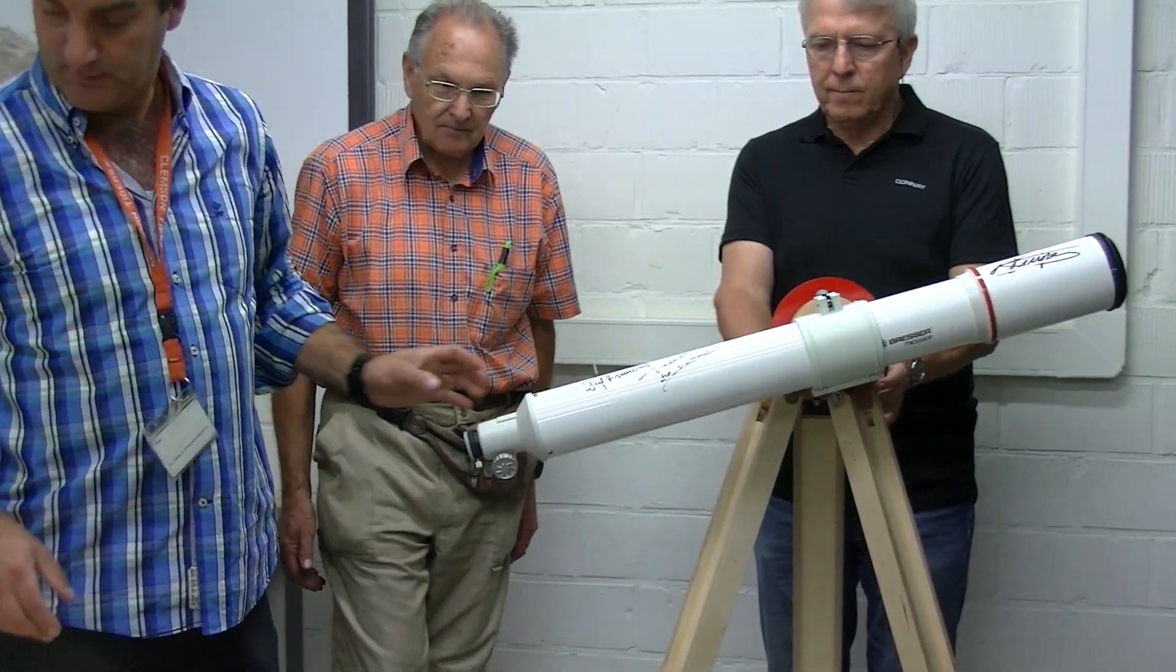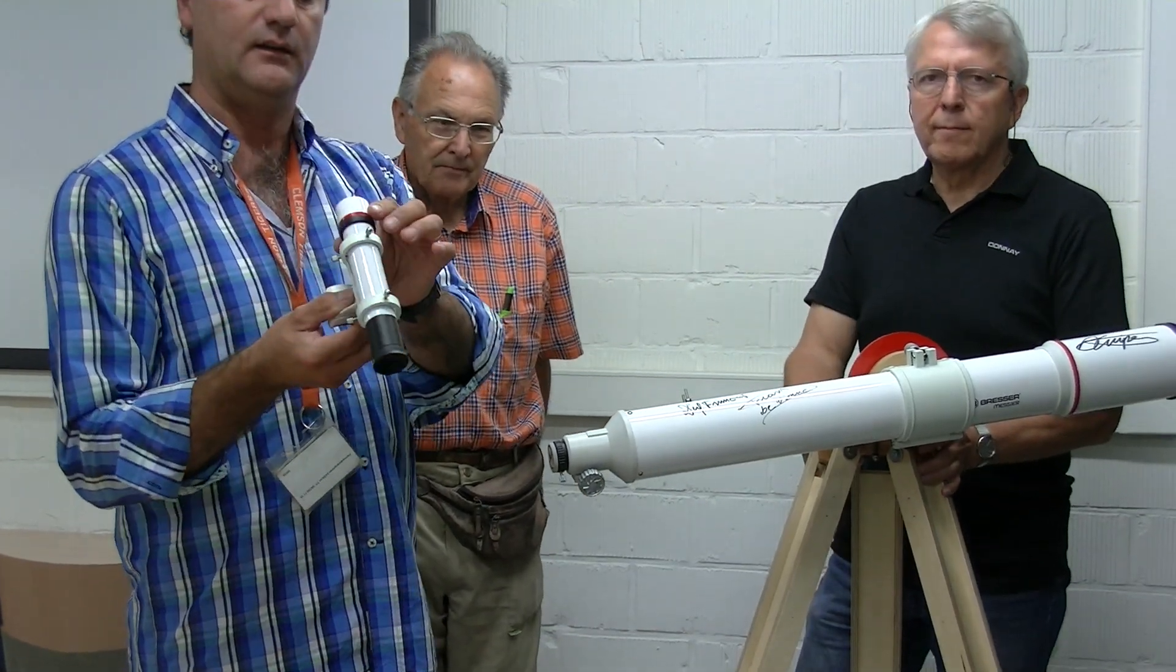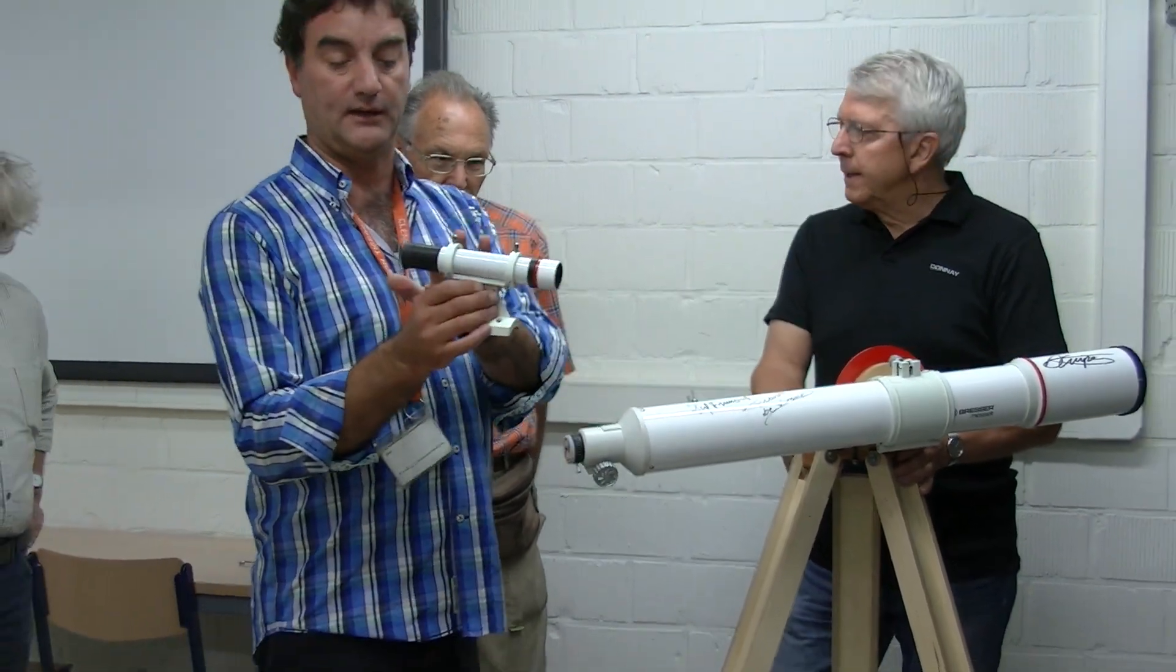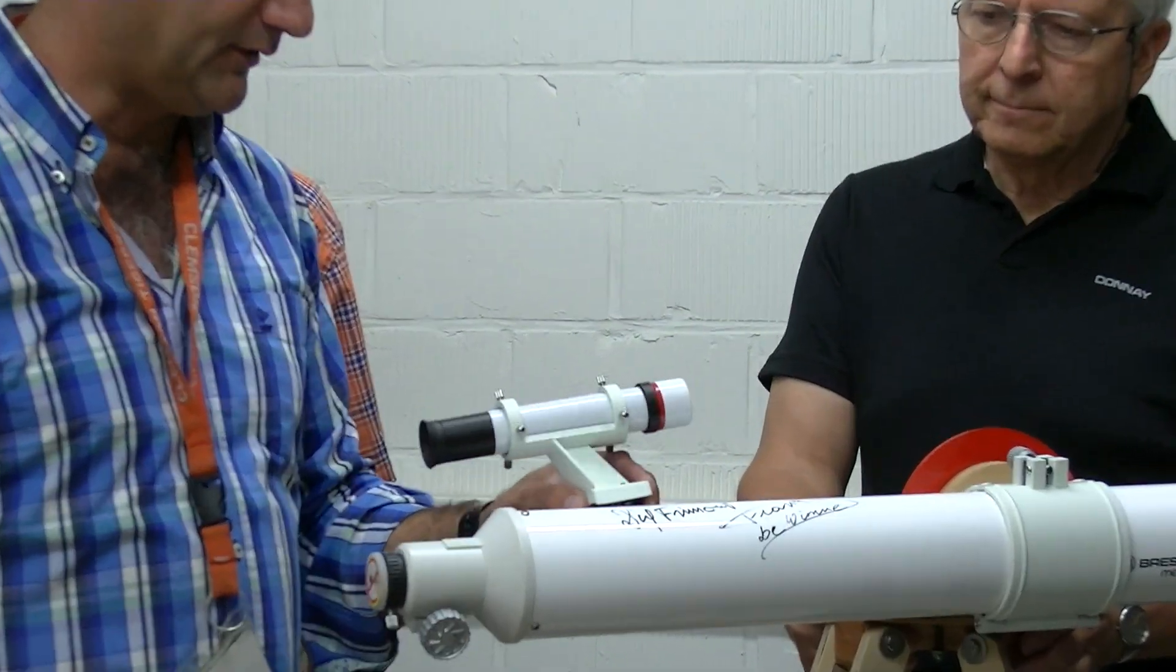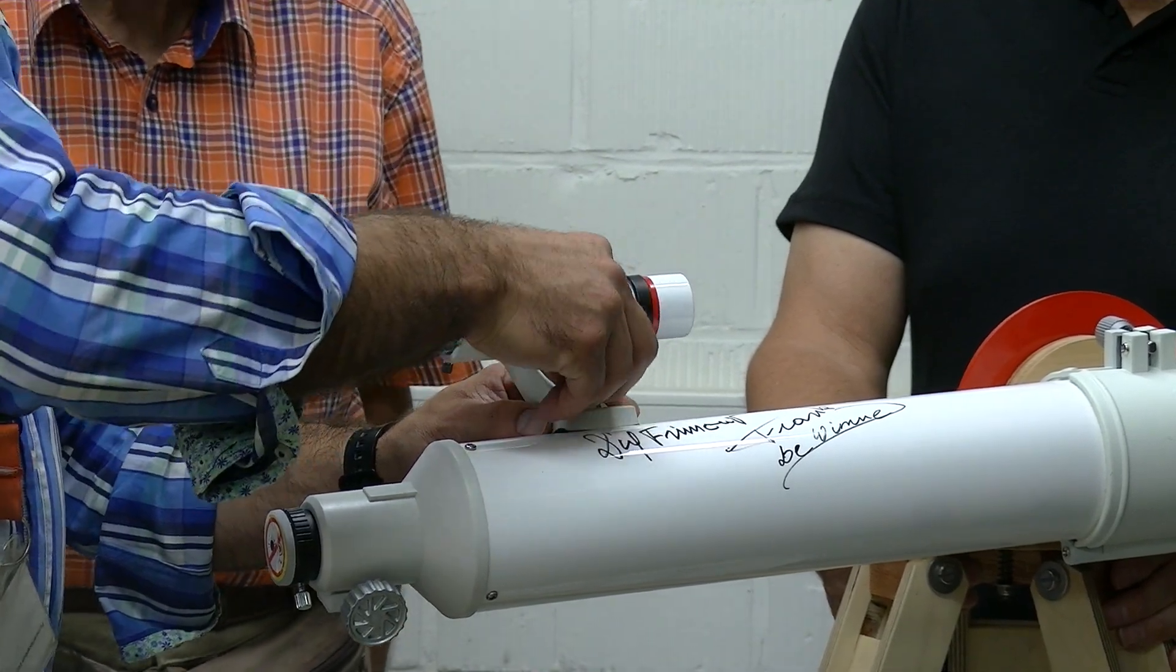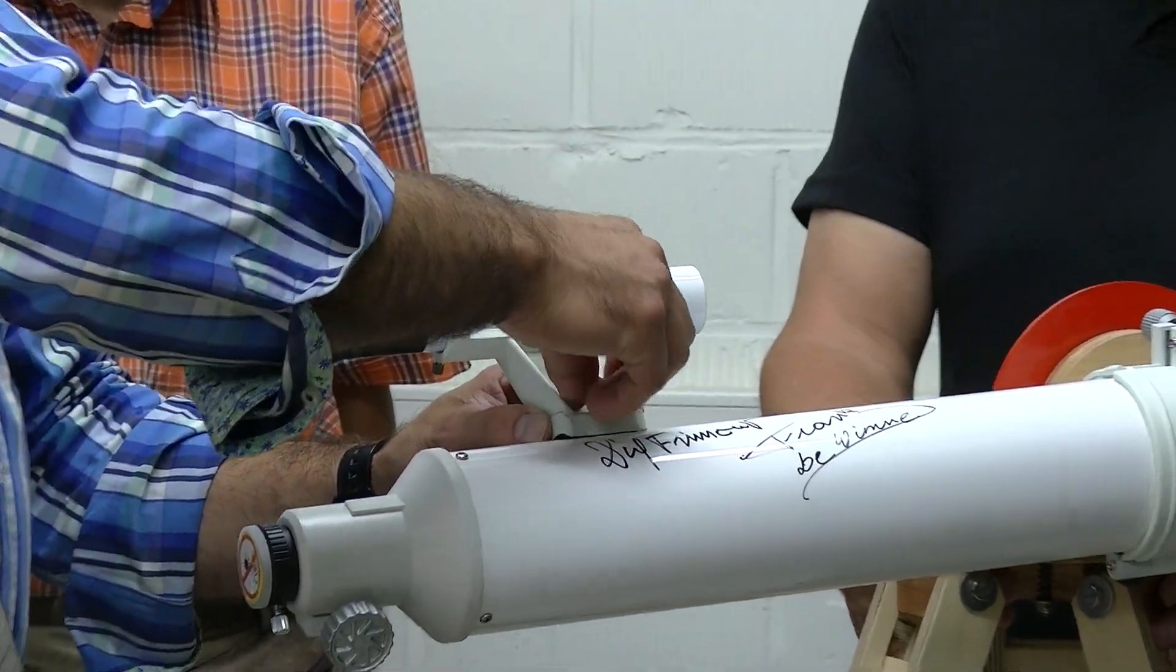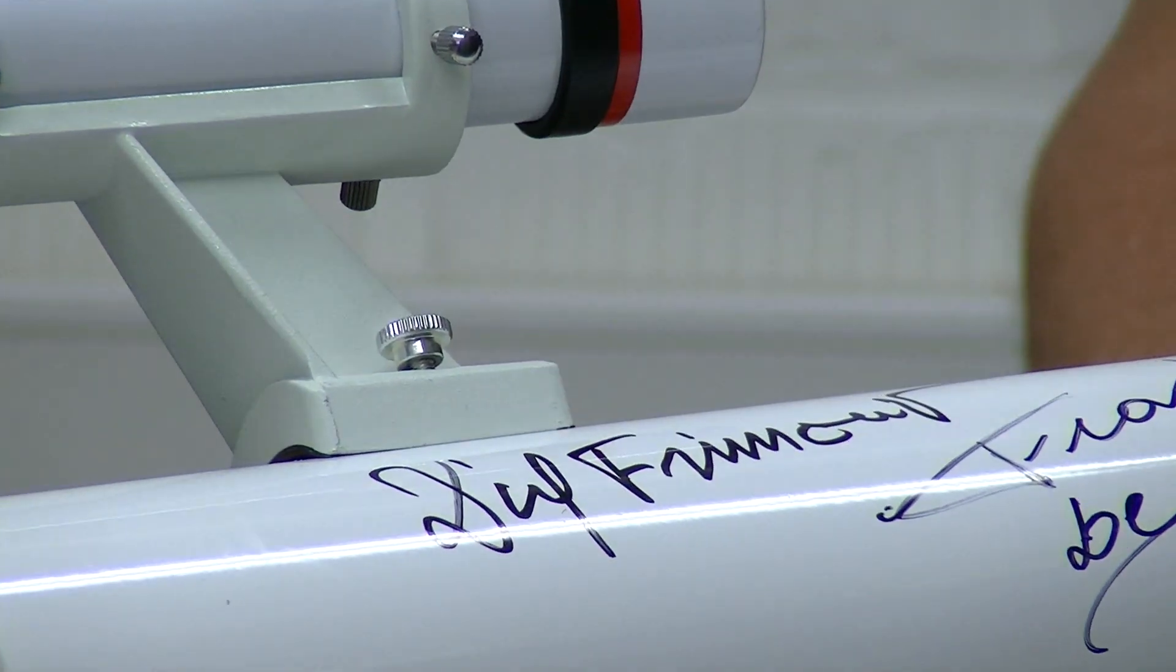Next step to assemble, you take the finderscope, a little telescope, front lens, back end. You have two balls here. Just put it on top. And then you have two special nuts. One on the front, and one on the back.